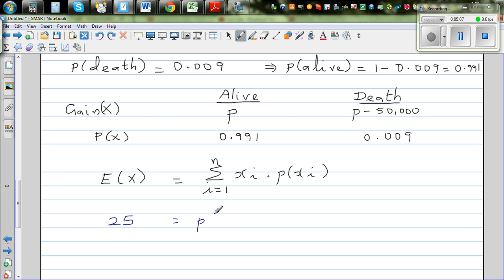This is your xi and this is your P of xi. So this is your random variable and this is your probability of that random variable. So this is P times 0.991 plus - because it's sigma - 0.009 times the respective random variable, which is P minus 50,000.